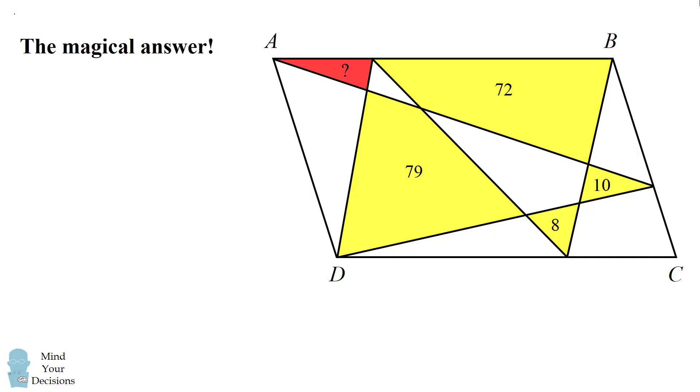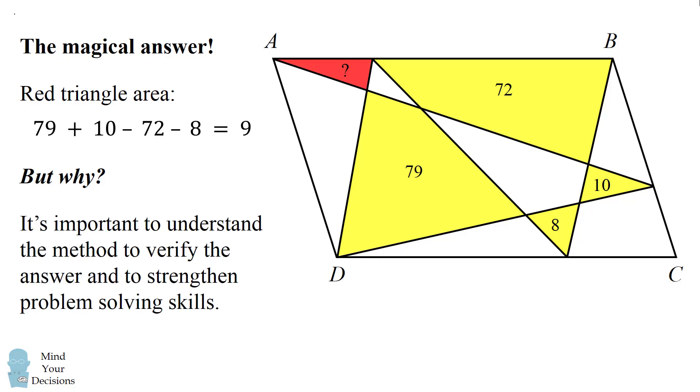So here's the magical answer. It turns out to be a simple calculation. The area of the red triangle is 79 plus 10 minus 72 minus 8, which equals 9. Wow! But why is this the answer? It's important to understand the method to verify the answer and to strengthen problem-solving skills.